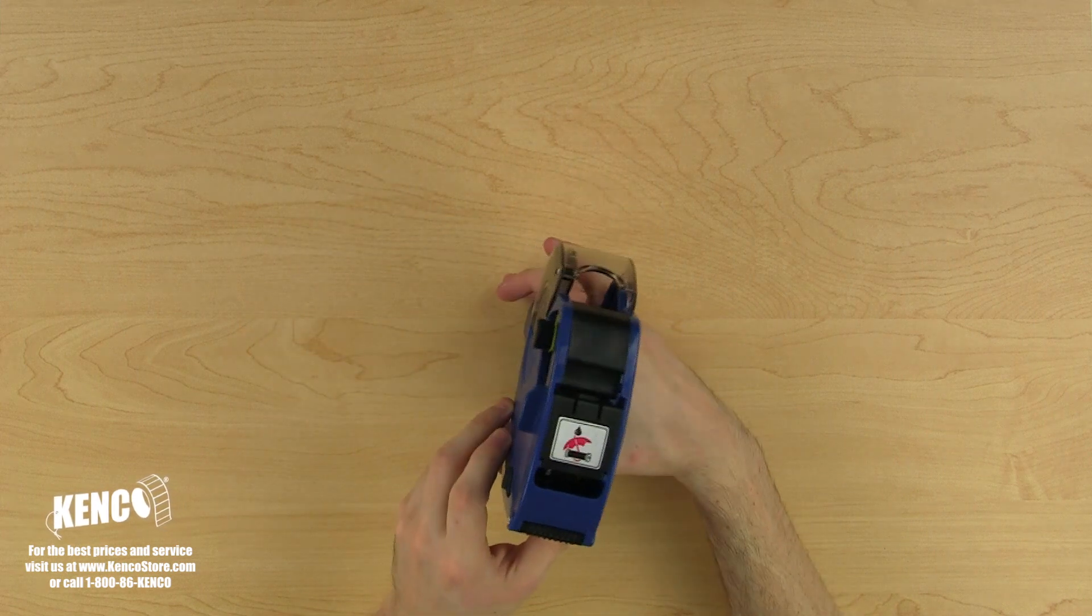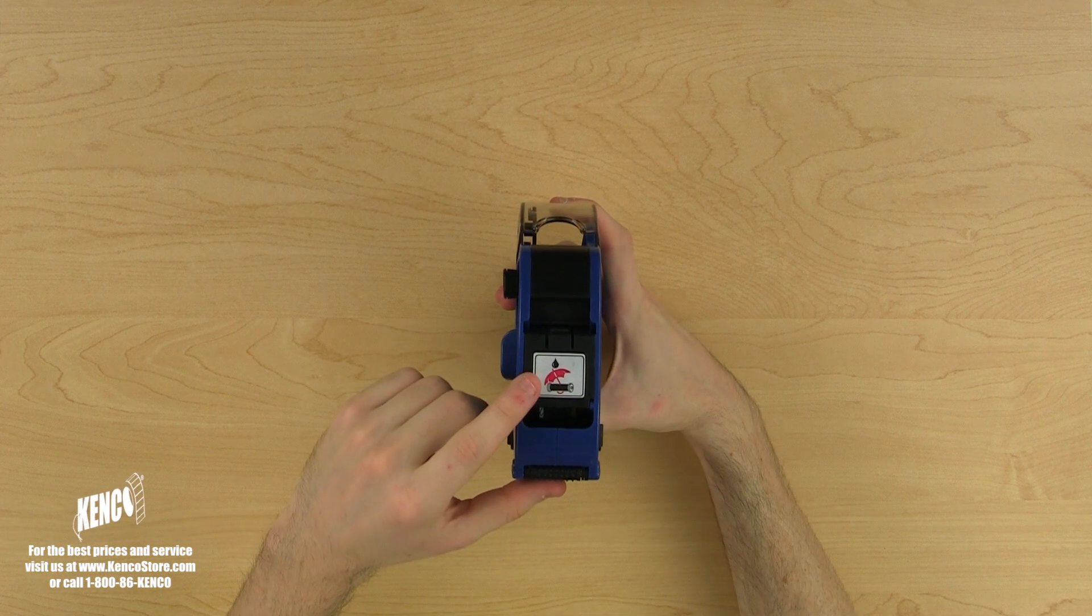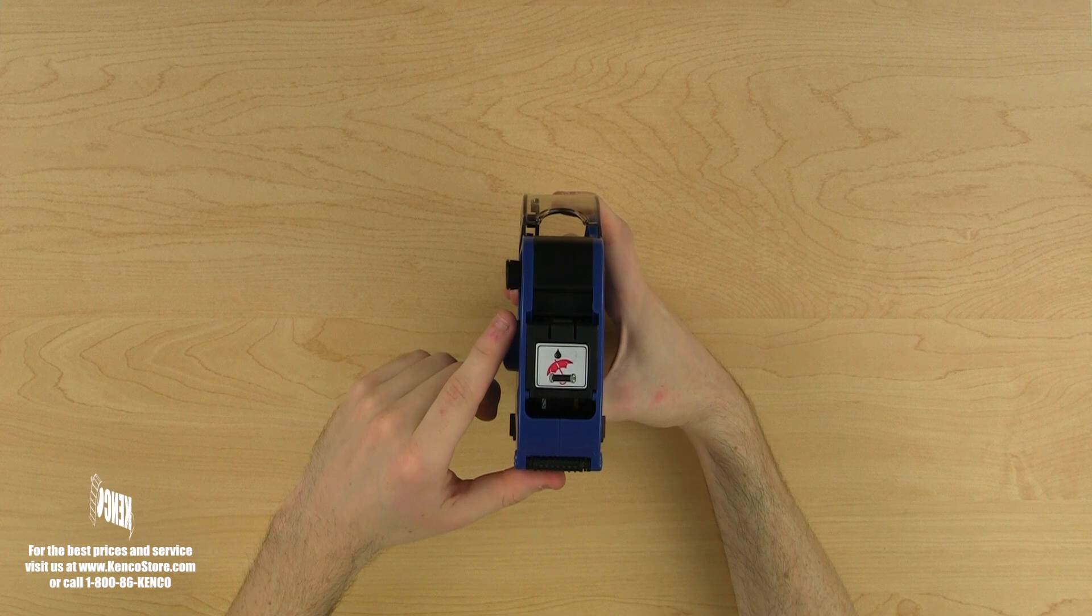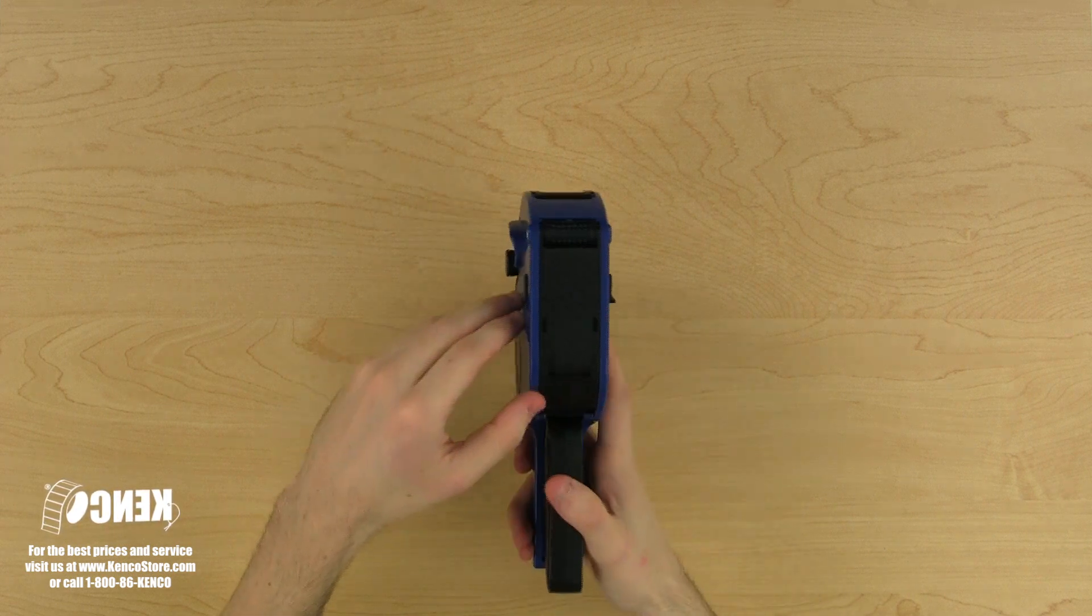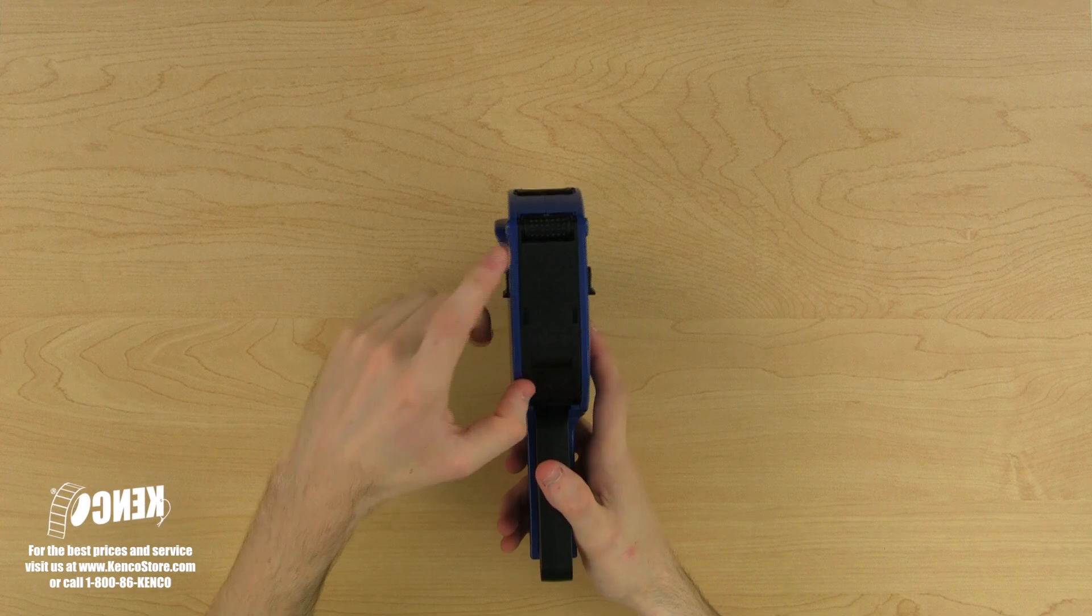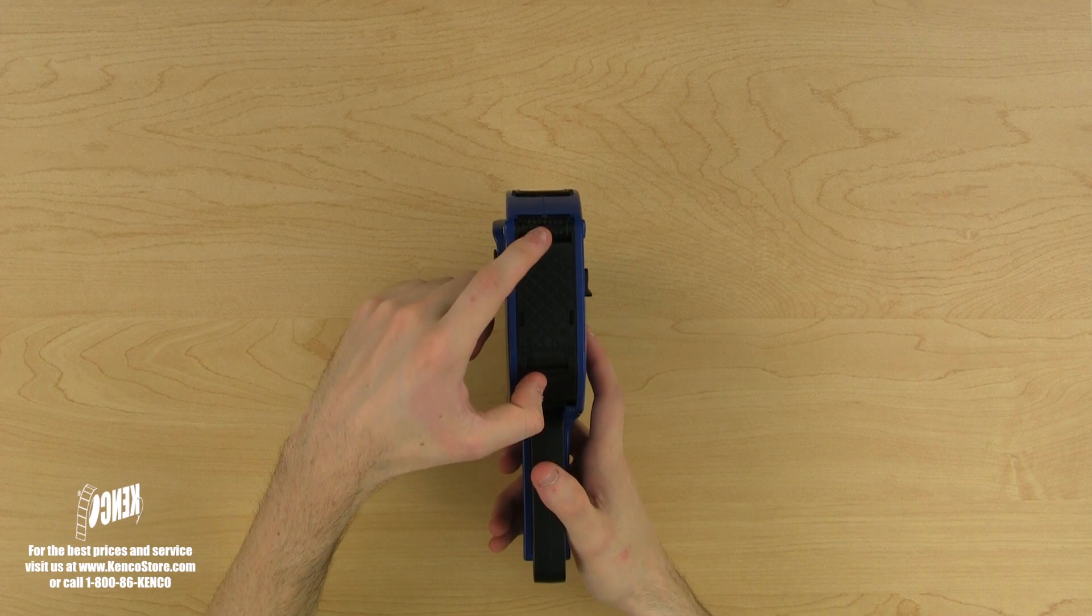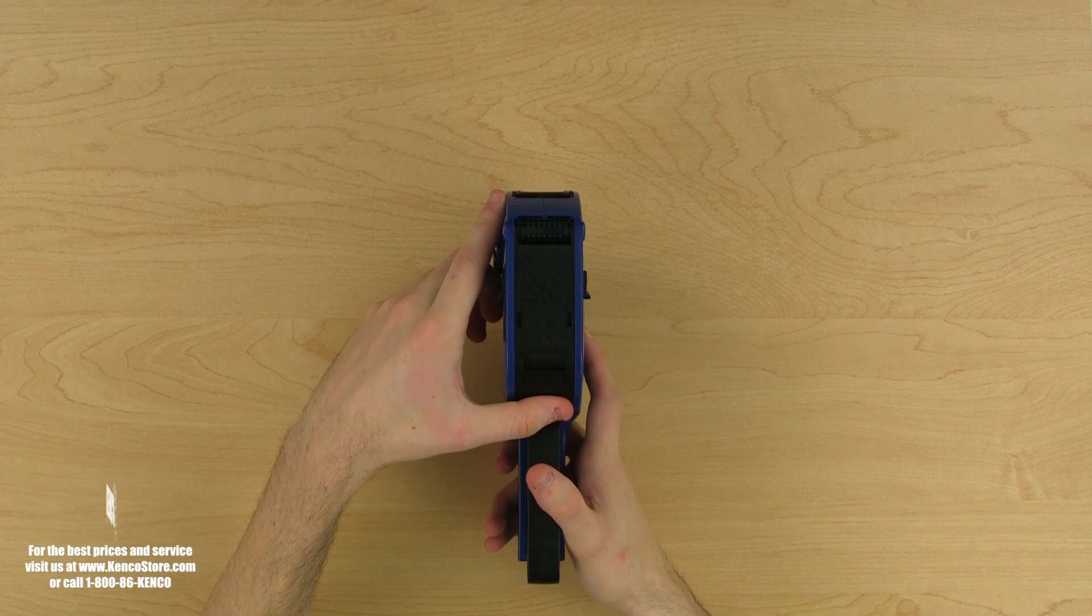This is where the labels rest when the gun is properly loaded. Let's take a look at the front of the gun. Here, you will see the ink roller assembly door resting below the print head. I'll be talking more about the ink roller assembly later on. Flip the gun to take a look at the bottom cover.